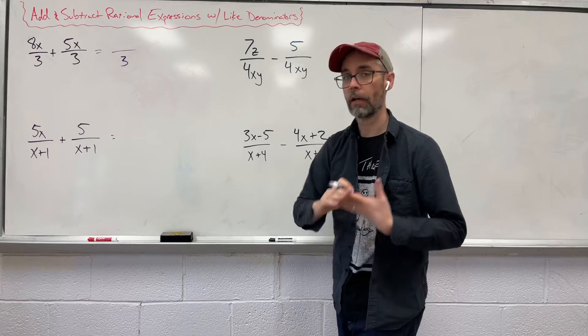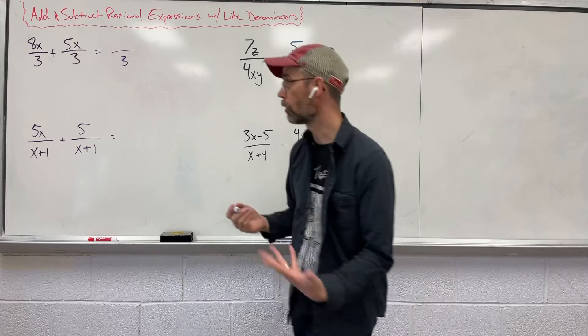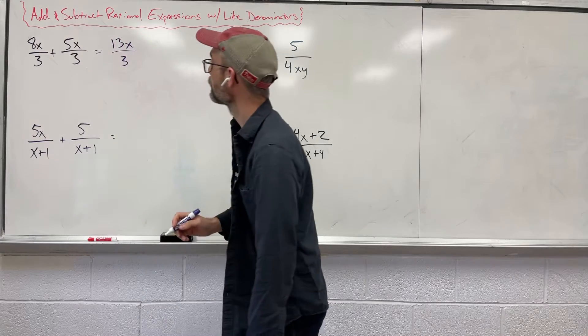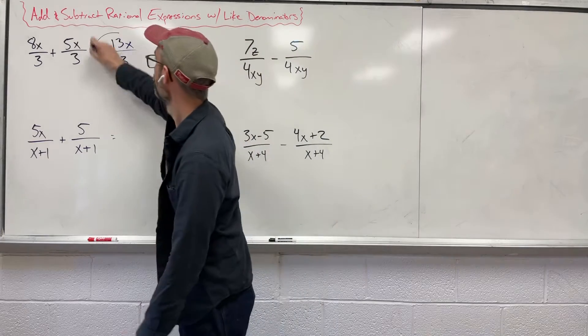The two numerators, 8x and 5x, we need to combine them, combine like terms, add them up, we're going to get 13x. We cannot simplify, we call it a day.